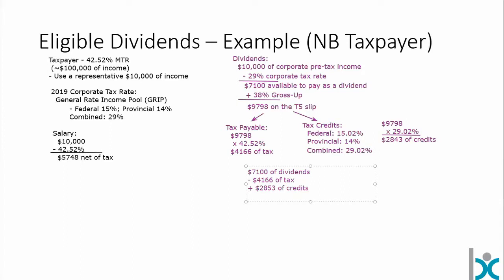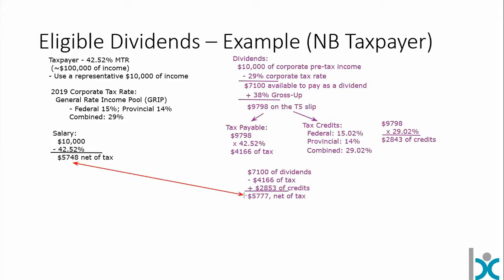That leaves us with $5,777 net of tax. This taxpayer would have $5,777 — very, very close, as promised, to what you would have if you had taken salary: about $29 more for taking dividends as compared to taking salary. And that's how dividend integration is supposed to work — it's supposed to be very, very close. So close that you're probably not making a tax-based decision; you're probably deciding whether to take salary or dividends on some other basis.